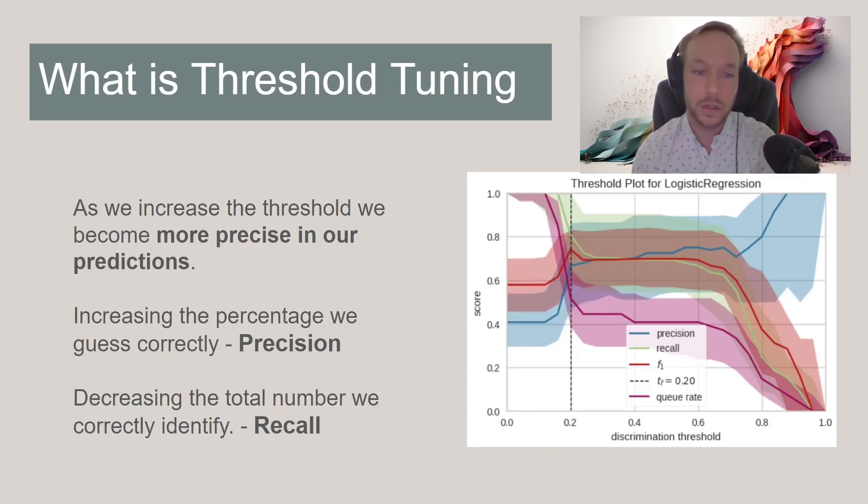So what is tuning the discrimination threshold? Really we're moving that threshold between where we're going to say for or against a specific class. So as we tune this, as we turn up the discrimination threshold, we're more confident in prediction one, our class one. We're going to increase the blue right here, you can see this is the precision, it's going to become more confident.